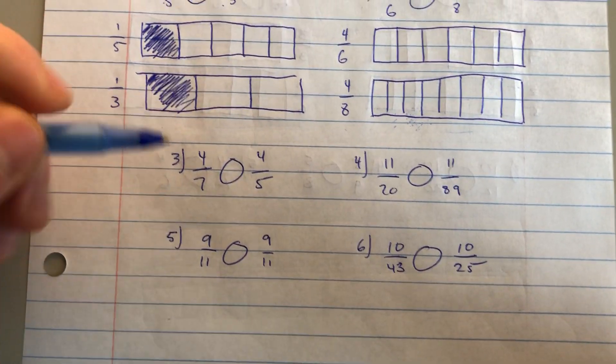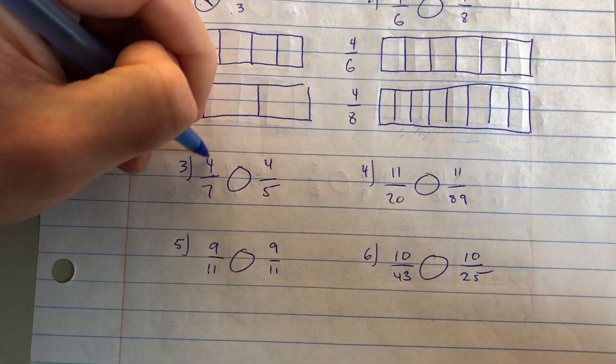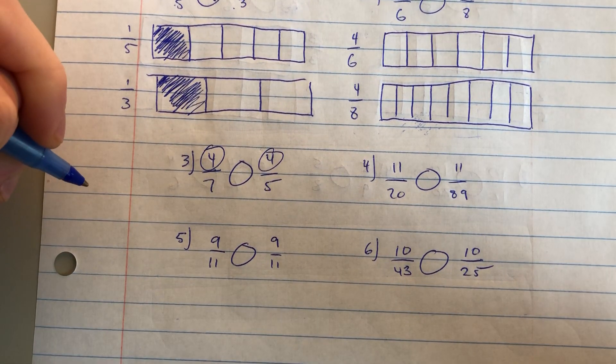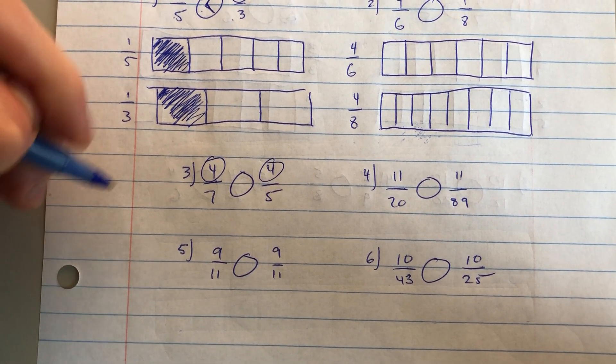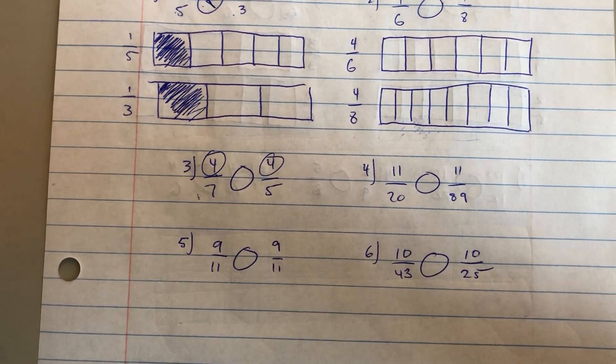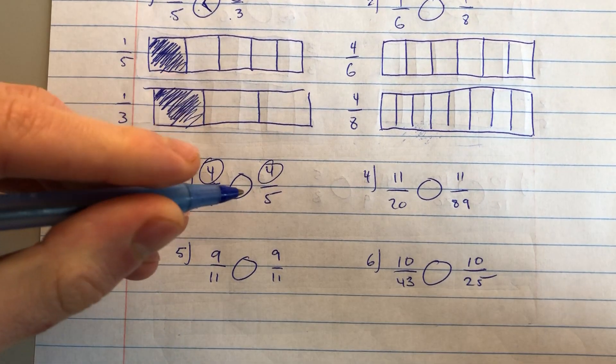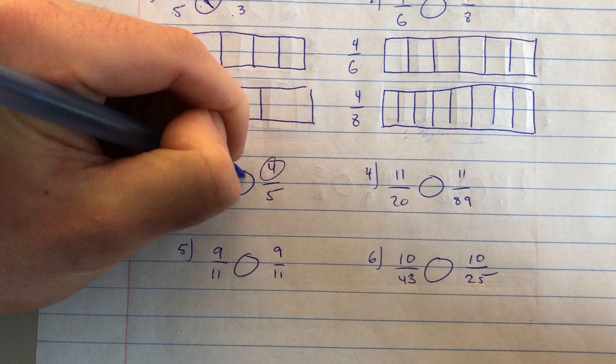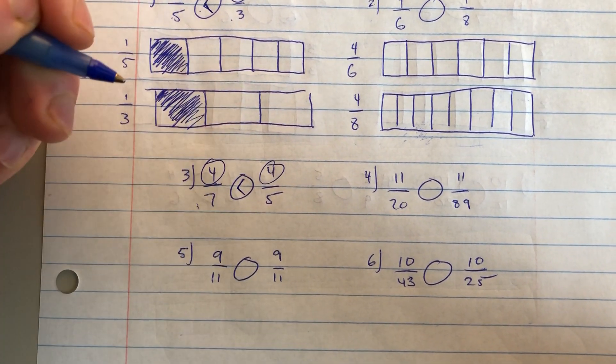Looking down at the bottom, I would see then that I have four-sevenths and four-fifths, which have these same numerators. Since the seven is the bigger denominator, it is the smaller fraction, so four-sevenths is less than four-fifths.